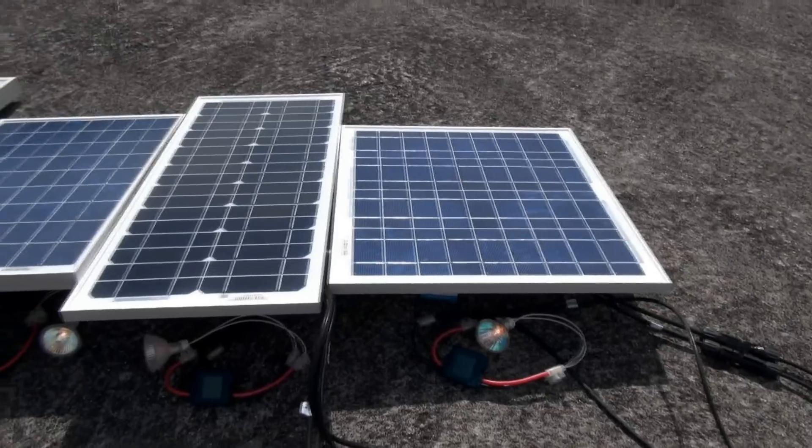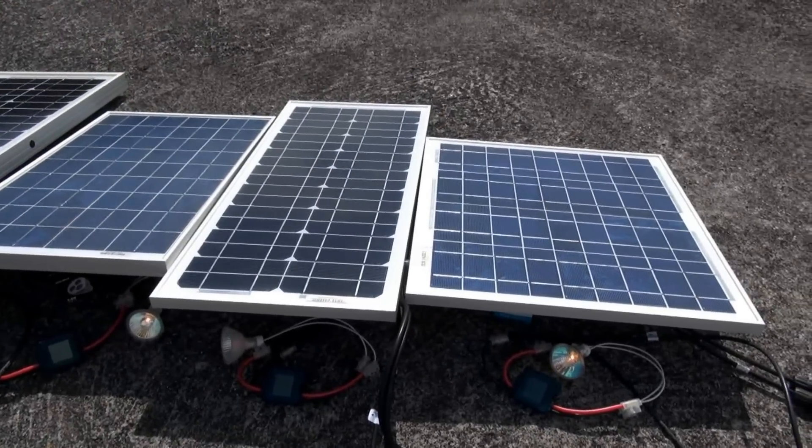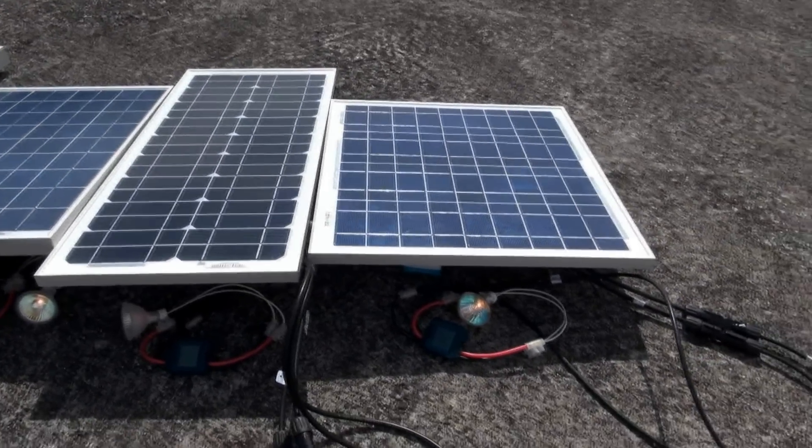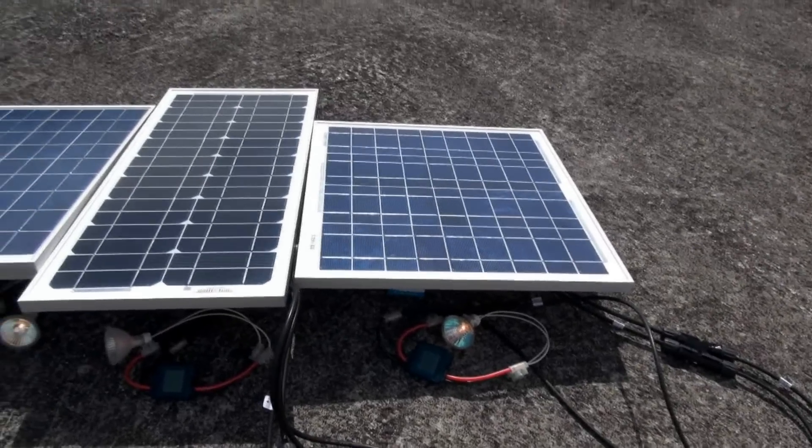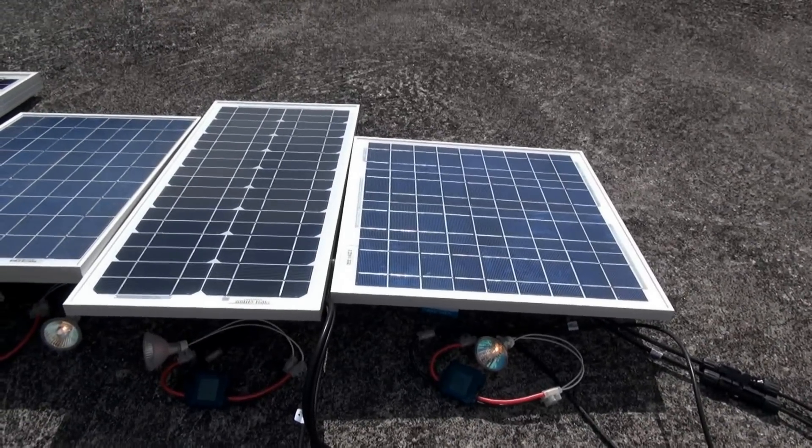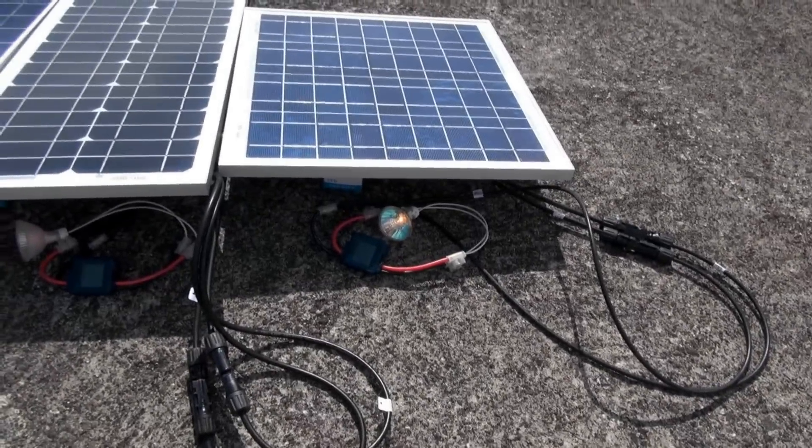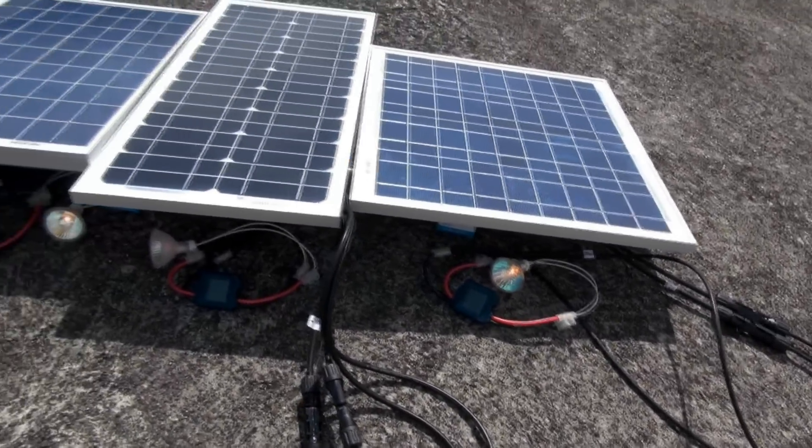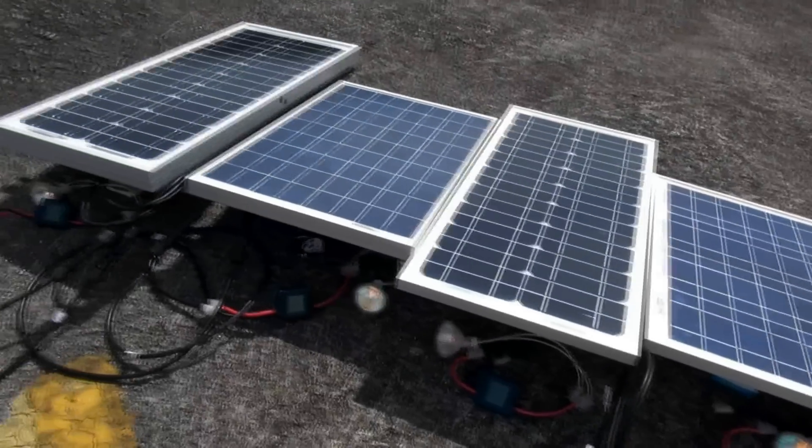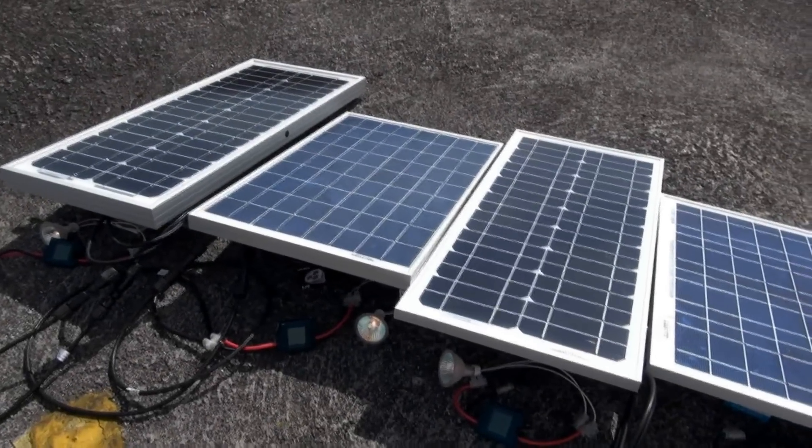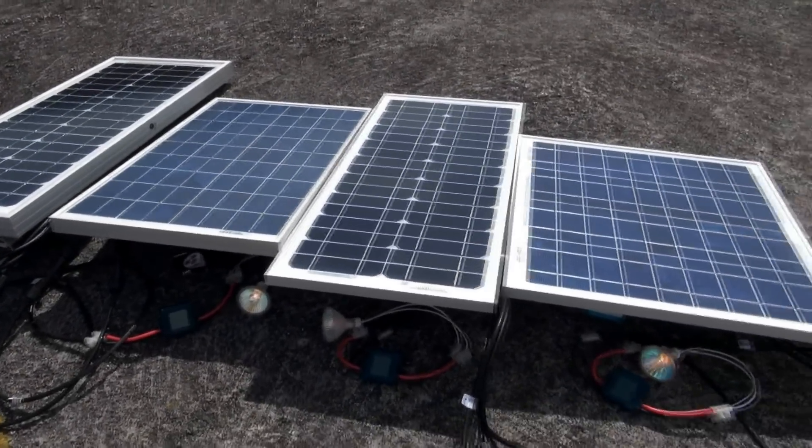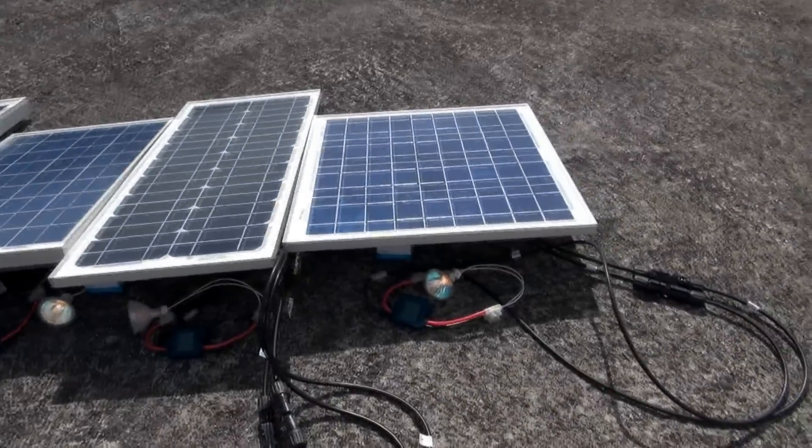Why they give you extra watt peak is because normally they need to give you a warranty for 25 years, warranty for 90% power output for 10 years and warranty for 80% output for 20 years. So in order to do that they will give you extra watts so that they can cover the warranty. So in another word, a 20 watt solar panel will be around 22 to 23 watts. So since we have around slightly higher, 22 to 23 watts, to light up a 20 watt light bulb will be good enough.